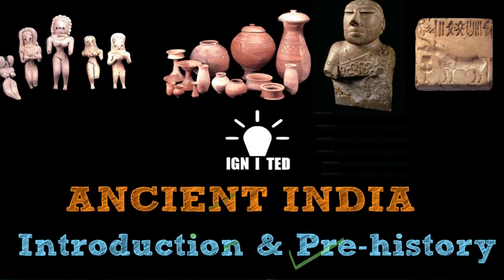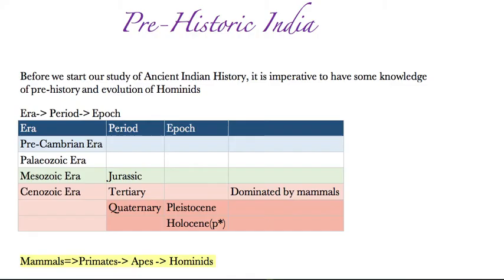Today we will be dealing with the prehistory of the Indian continent. Before we start our study of ancient Indian history, it is imperative to have some knowledge of prehistory and the evolution of human beings and hominids. The geological history has been divided into three things: era, period, and epoch. We have four eras — the first is the Pre-Cambrian era.